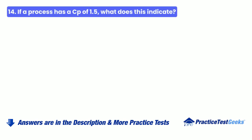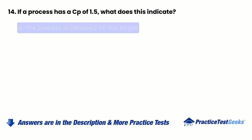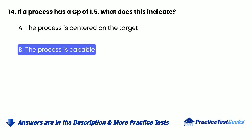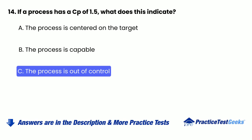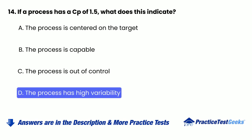14. If a process has a Cp of 1.5, what does this indicate? a. The process is centered on the target. b. The process is capable. c. The process is out of control. d. The process has high variability.